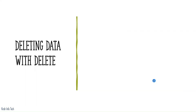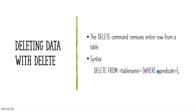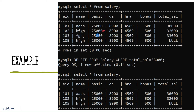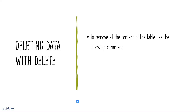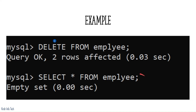Next, deleting data with the DELETE command. The syntax is: DELETE FROM table_name WHERE condition. For example, DELETE FROM salary WHERE total_salary = 33000 — that row gets deleted. To remove all content from a table, use: DELETE FROM table_name without any condition. For example, DELETE FROM employee — then SELECT * FROM employee will show an empty set.